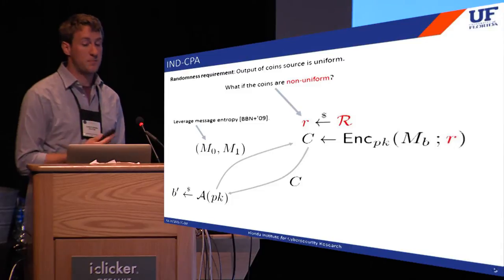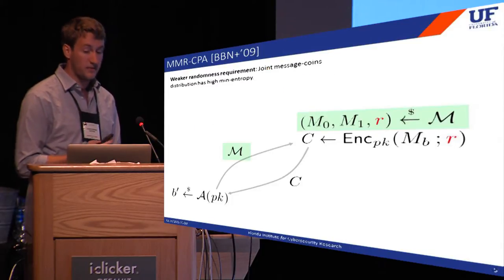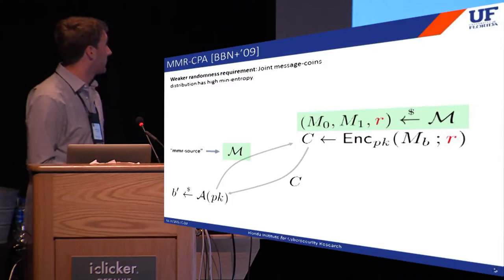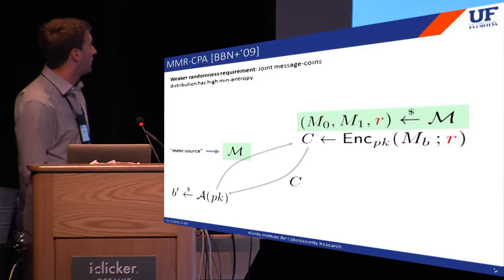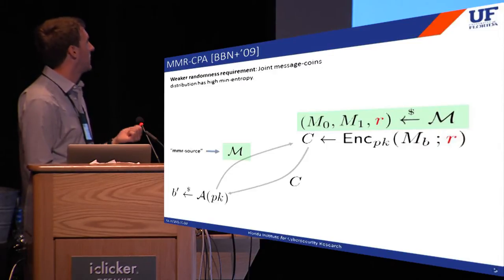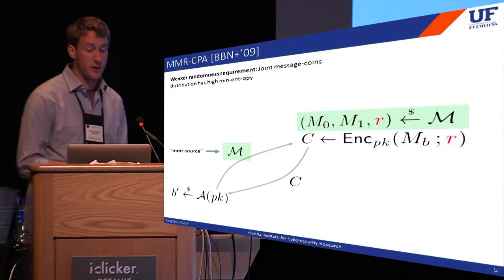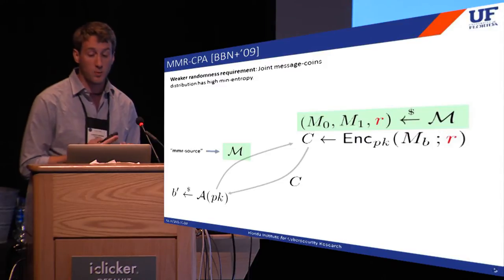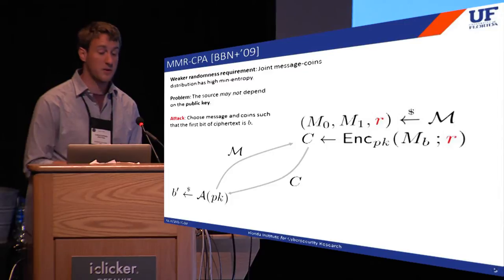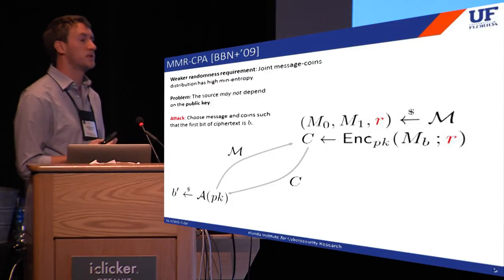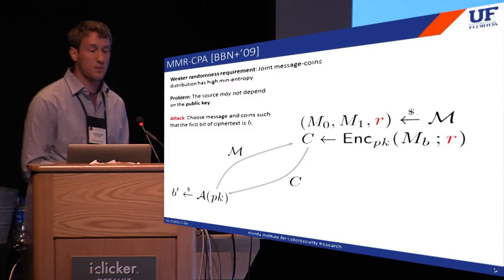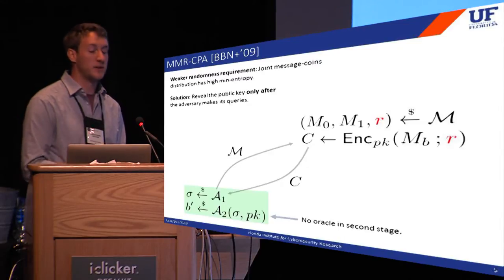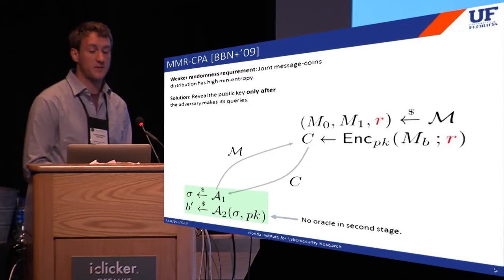In a chosen distribution attack, the adversary specifies a distribution on message pairs. In fact the notion is a little stronger: we allow messages and coins to be jointly distributed. We have the adversary specify a randomized algorithm called an MMR source that outputs a message, a message, and some randomness. The oracle executes this algorithm, encrypts one of the messages with the coins, and returns the output. However, there's a problem: we can't provide security for distributions that depend on the public key — given the public key, the adversary can craft an MMR source such that the ciphertext leaks the challenge bit in just one query. To ameliorate this, we withhold the public key from the adversary until after it finishes its queries.